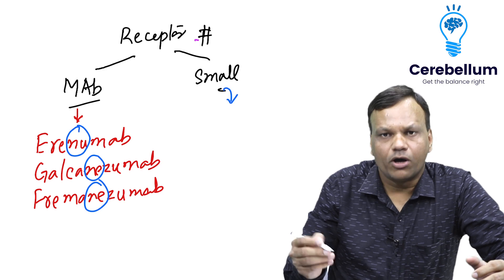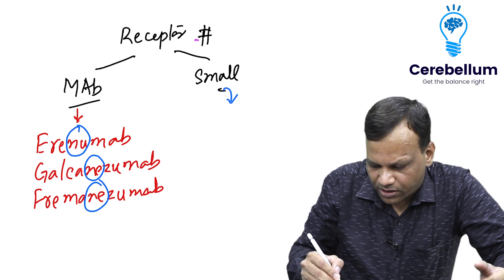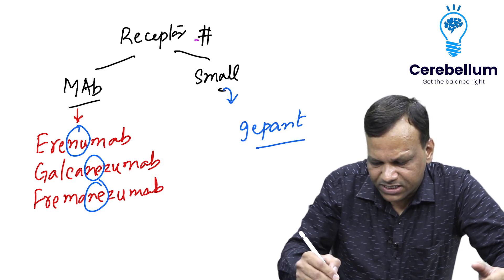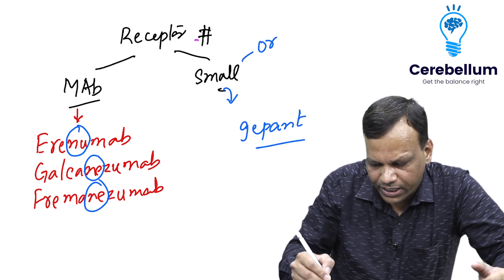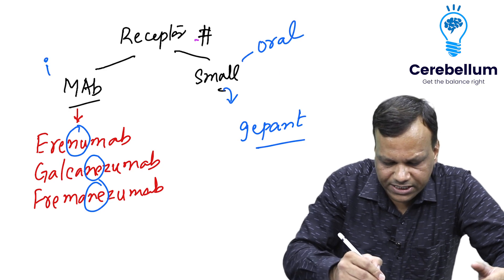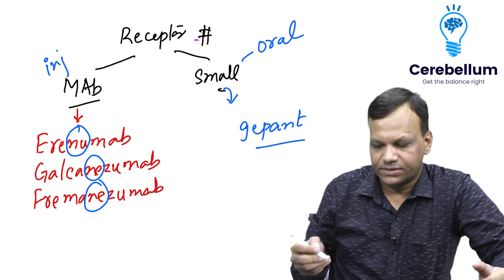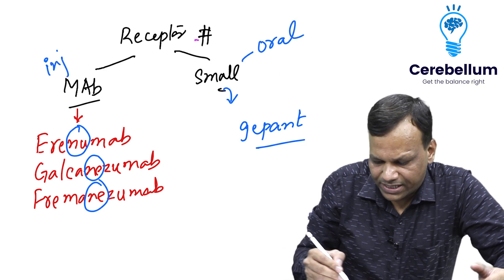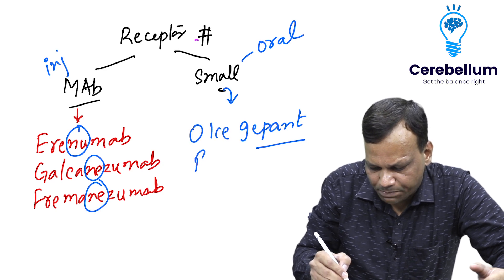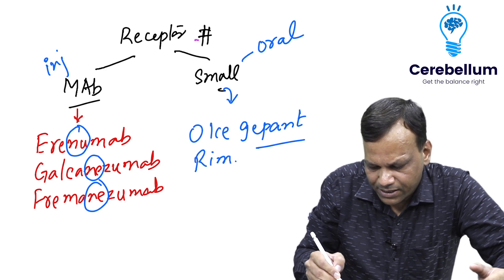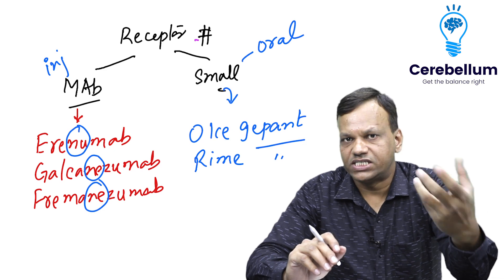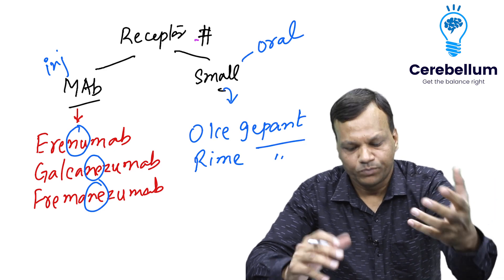Then there are small molecules called gepants. The advantage of gepants is that they can be given orally, whereas monoclonal antibodies are injectable drugs. Drugs ending with '-gepant', like olcegepant and rimegepant, are small molecule antagonists of CGRP receptors.